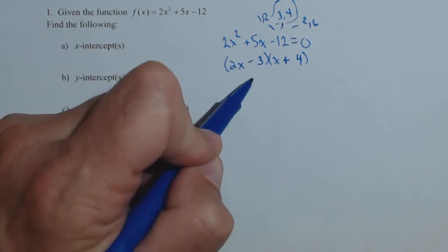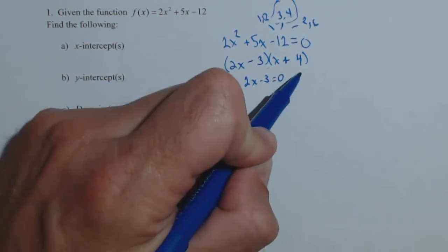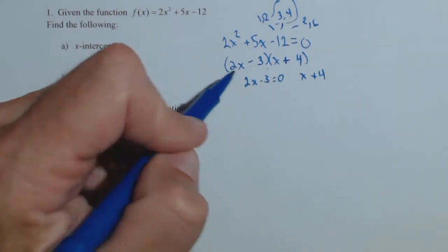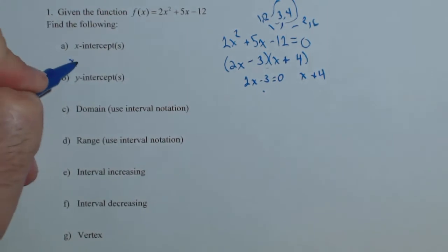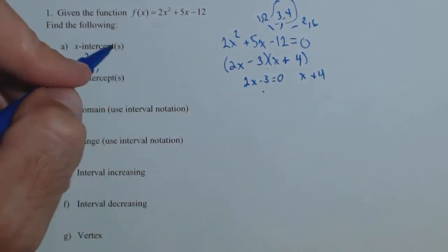Setting each of these equal to 0 and solving gives us our zeros. And so we're going to have two of them. This one's going to solve out to 3 halves. So x equals 3 halves, and this one's going to solve out to negative 4.